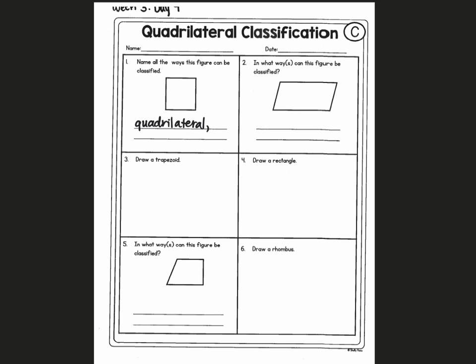The next shape is trapezoid. This is not a trapezoid because it has more than one pair of parallel sides, so it's not a trapezoid — but that means it is a parallelogram. A rhombus is a parallelogram with four congruent sides, so this shape is also a rhombus because it has four equal sides. A rectangle is a parallelogram with four right angles, so this is also a rectangle.